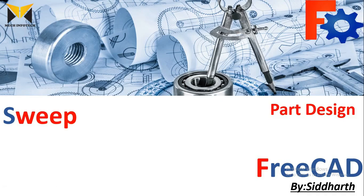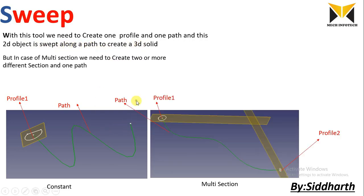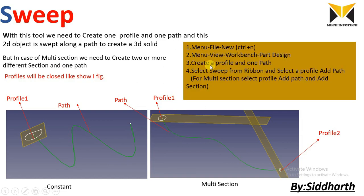Hello everyone, I am Siddharth. Today's topic is the Sweep tool. With this tool we need to create one profile and one path, and this 2D object is swept along a path to create a 3D solid. In the case of multiple sections, we need to create two or more different sections and one path. The profile will close as shown in the figure. Here are the steps on how to use this tool.